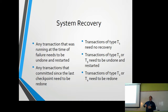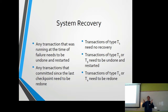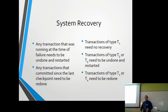Any transaction running at the time of failure needs to be undone and restarted. Any transactions committed since the last checkpoint need to be redone — the write-ahead log takes care of that. The transaction manager looks at the write-ahead log: if it sees a transaction started with a bunch of instructions but no commit, the data is gone — it undoes it, and the user will discover the next day the transaction never happened.